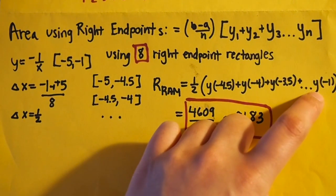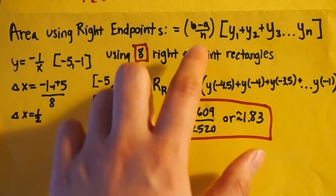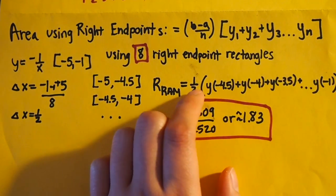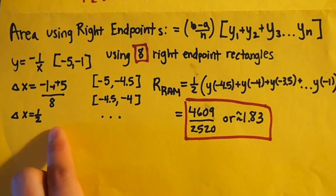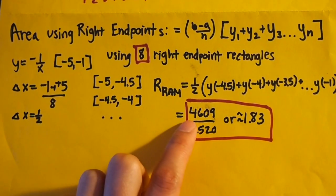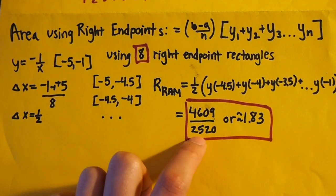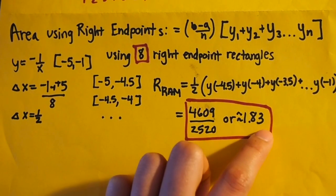So when we use a formula, we plug in the delta x, and all the y values in 0.5 increments, we find that the answer will be 4,609 all over 2,520, or about 1.83.